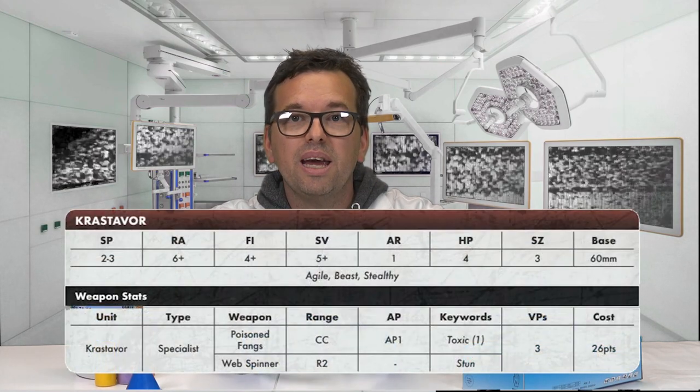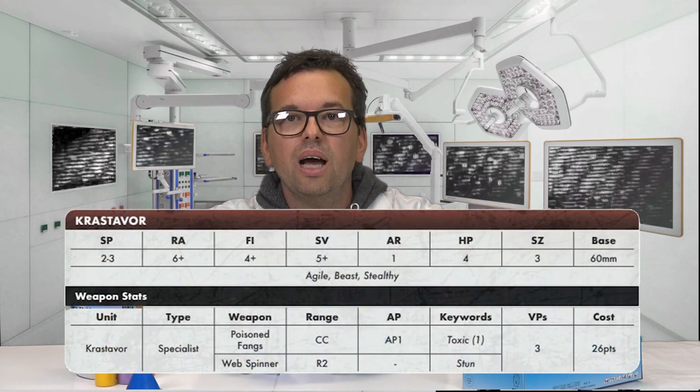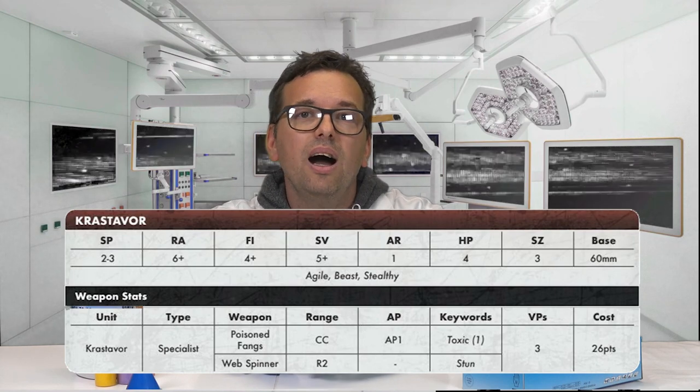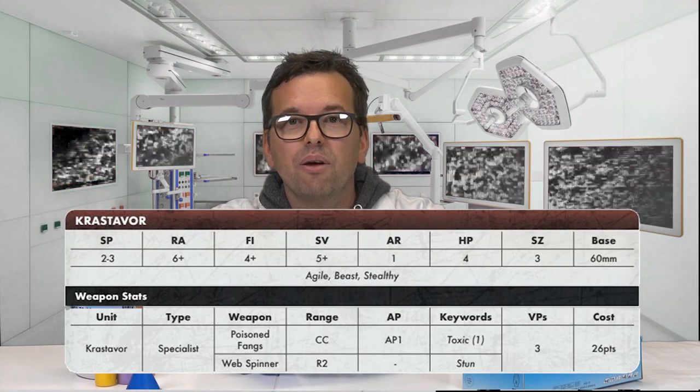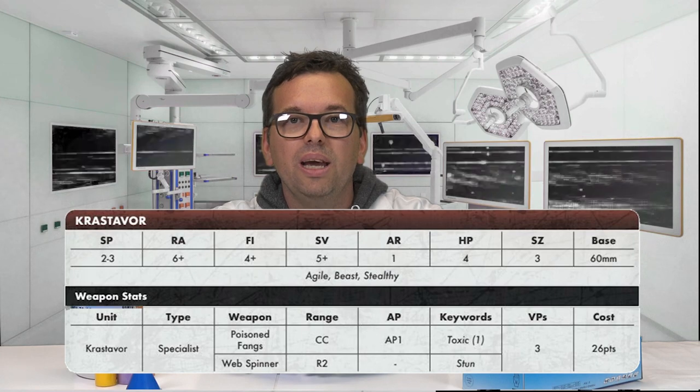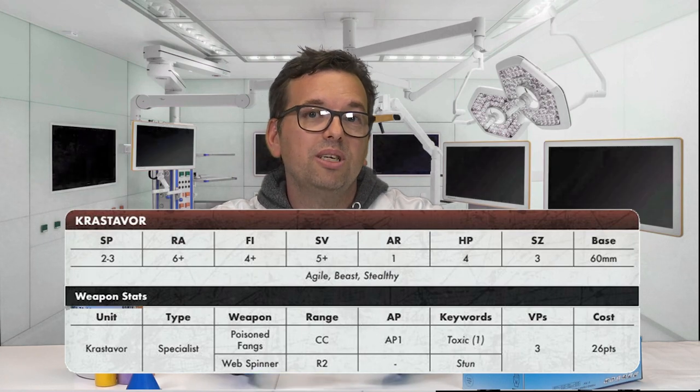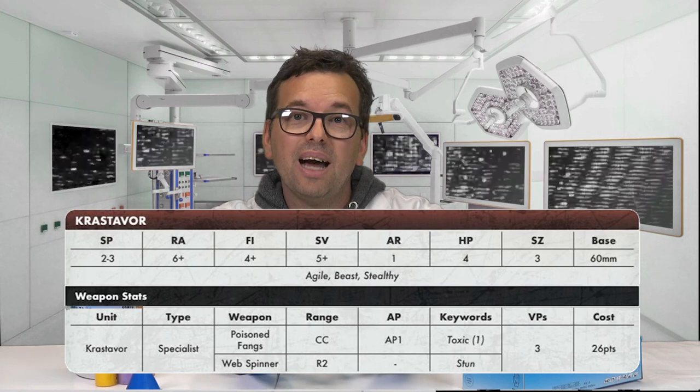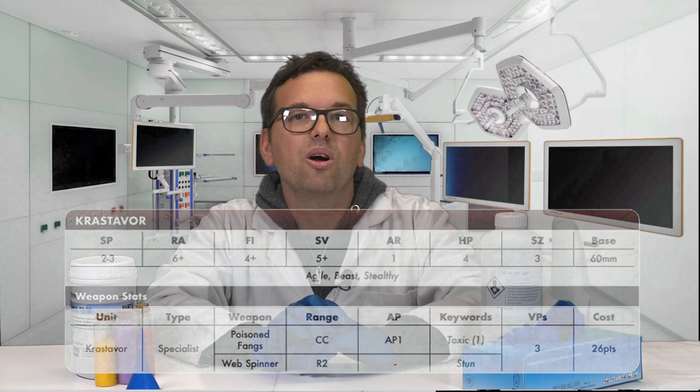You've also got the Crastivore, the big gribbly spider, and that's got a speed of two three and he's very good in combat. So you want to get that up quite quickly so you're putting pressure on the enemy straight away, so they're dealing with that while everything else is moving up and attacking as well.